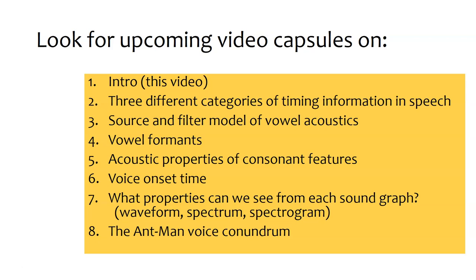The fifth video will be the longest because consonants have a lot of features to cover. There's a particular consonant feature called voice onset time, which is one of the most well-known consonant features, so if you're going to understand any one in a lot of detail, that's probably the one. In the seventh video, we'll reflect on what we can see using waveform, spectrum, or spectrogram views of speech to make sure we know where to look in these graphs to obtain the information we want.